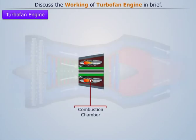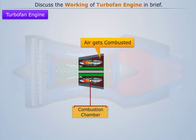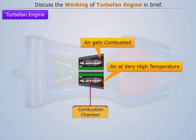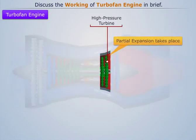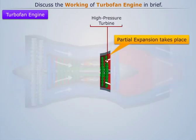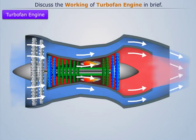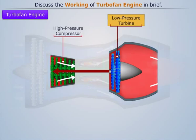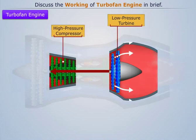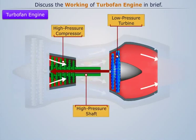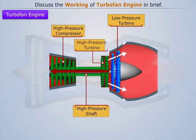This high pressure air then enters the combustion chamber, where fuel is added and combusted, thereby increasing its temperature to maximum cycle temperature. The hot combusted gas then enters the high pressure turbine, where it expands a little. This power produced is used to drive the high pressure compressor through the high pressure shaft and also some auxiliaries.